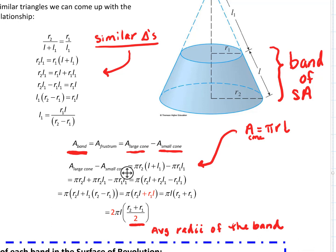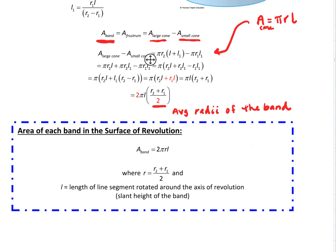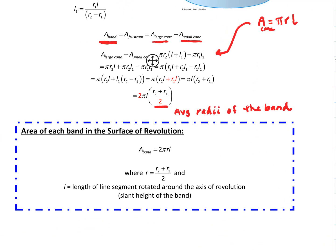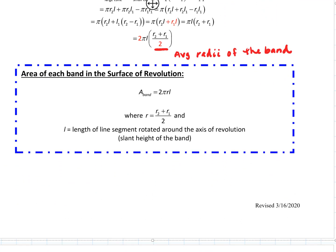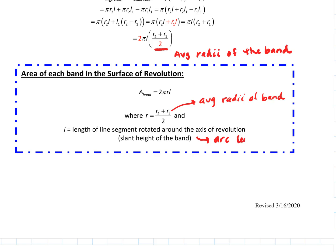The area of each band in that surface of revolution is 2πrl, where r equals (R2 + R1) / 2 — that's the average radii of the band — and l is the actual length of the line segment. This whole idea of the length of the line segment connects back to arc length, which we just finished in the last section. That's going to be useful for us.